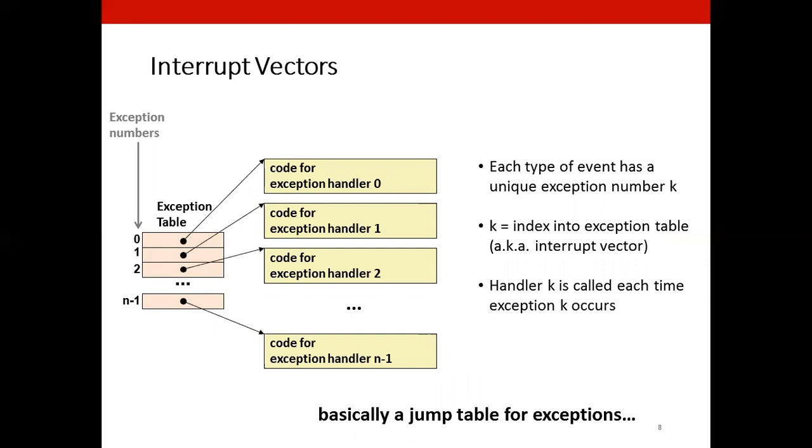So essentially, K is the index into the exception table. The handler K is called each time exception K occurs.